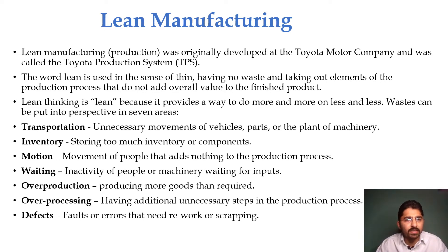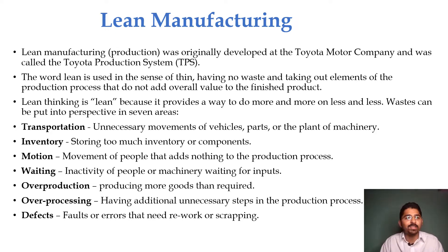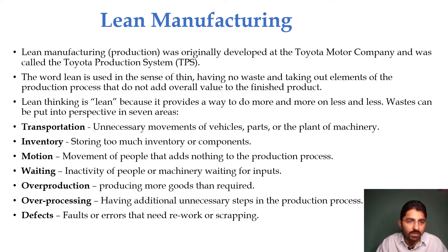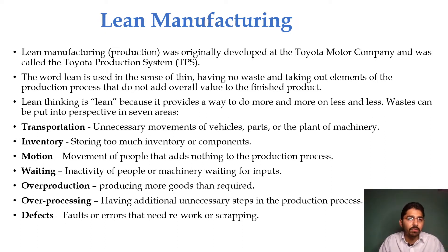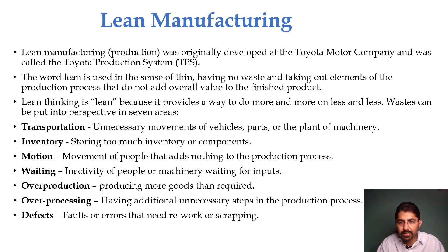Waste can be categorized into 7 types of waste. You can remember these 7 categories by the abbreviation TIMWOOD: Transportation, Inventory, Motion, Waiting, Overproduction, Over Processing, and Defects.